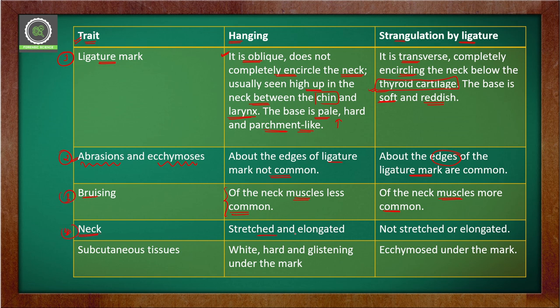The fourth trait is the neck: in case of hanging, the neck is stretched and elongated, whereas in ligature strangulation there is no stretching or elongation. The fifth trait is the subcutaneous tissues of the neck — in hanging, tissues near the ligature mark appear hard, white, and glistening, while in ligature strangulation the subcutaneous tissues are ecchymosed under the mark.